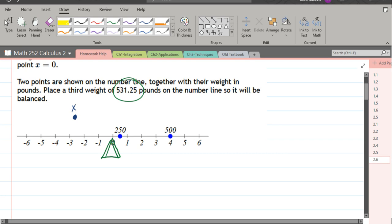So the 250 pound weight is one half away from zero. And the 500 pound weight is much further away. It's a distance four away.